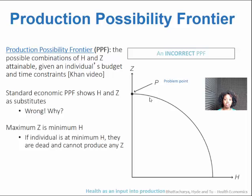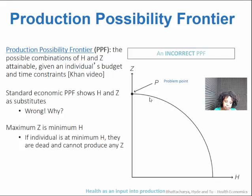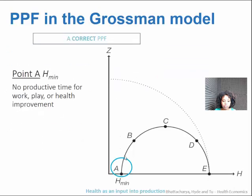But it doesn't perfectly apply to this scenario with the Grossman model. Why? Because you can't exactly have zero h. If you have zero health, you're dead, so you can't have any z if you're dead. There is a minimum amount of h that's greater than zero. That's what this graph shows — the minimum amount of h greater than zero is to the right of zero on the x-axis of h. But still at that minimum point of h, you're getting no z and you have no productive time to allocate towards anything. You're just not dead.